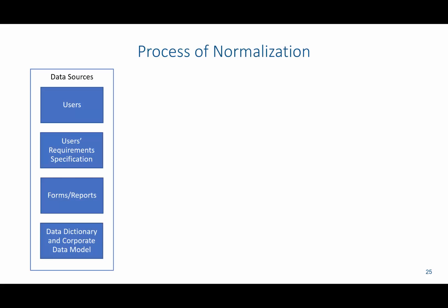Now that we understand functional dependencies, we are ready for the process of normalization. Data comes from various sources, such as users, user requirement specifications, forms, reports where people enter data, data dictionaries, and corporate data models.